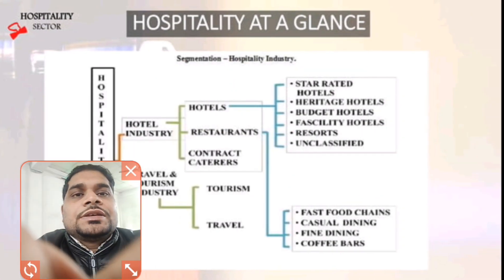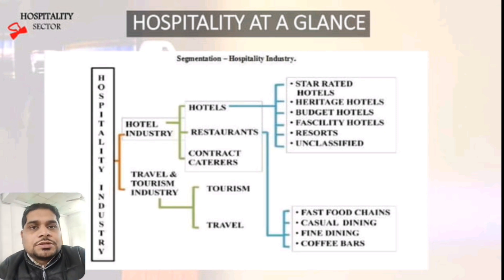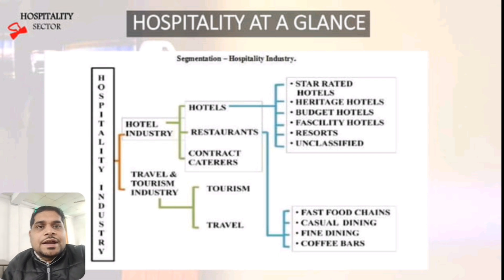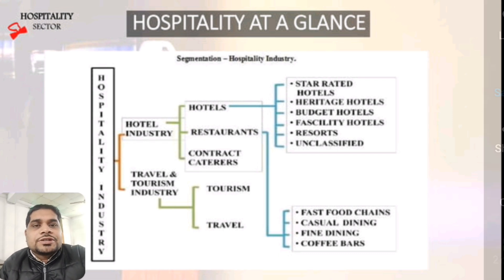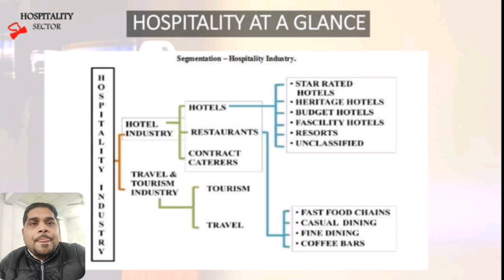Basically, the hospitality sector is divided into sub-parts: the hotel industry and the travel and tourism industry. The hotel industry is further divided into hotels, restaurants, and contract caterers, and under tourism — travel and tourism. Further, hotels are classified by star rating.